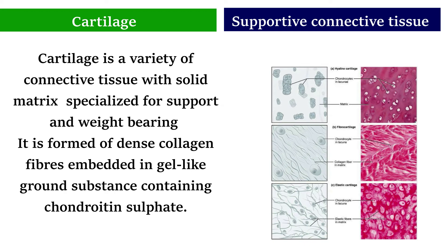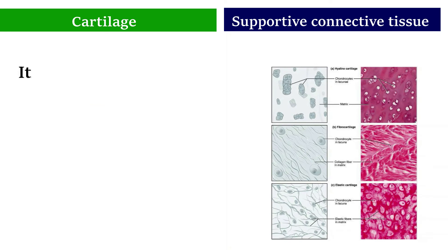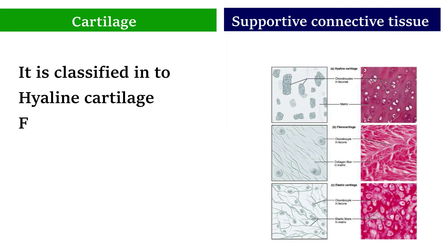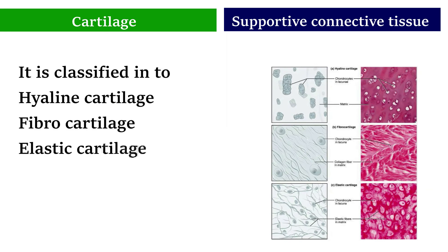Cartilage is a variety of connective tissue with a solid matrix, specialized for support and weight bearing. It is formed of dense collagen fibers embedded in a gel-like ground substance containing chondroitin sulfate. Cartilage is classified into three types: hyaline cartilage, fibrocartilage, and elastic cartilage.